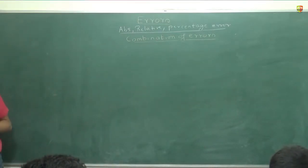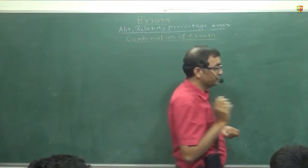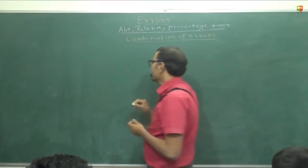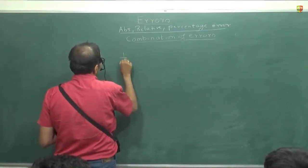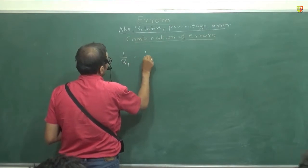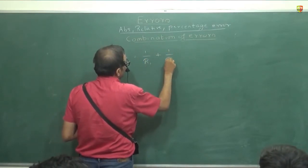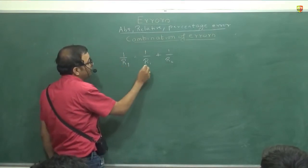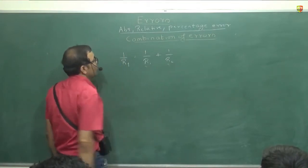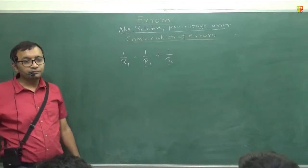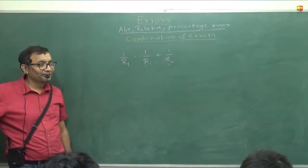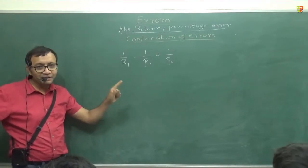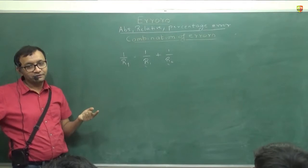Do you remember how to find the equivalent resistance if resistances are connected in parallel? 1 by R equivalent is equal to 1 by R1 plus 1 by R2. Now if I ask you to find out the error in R equivalent given error in R1 and R2, will you be able to? We have not done this kind of thing, right?